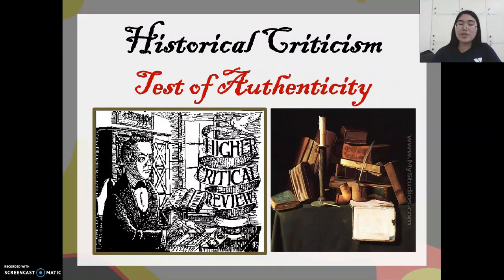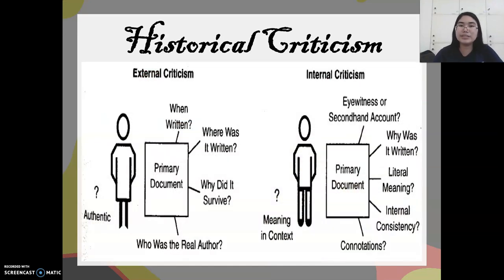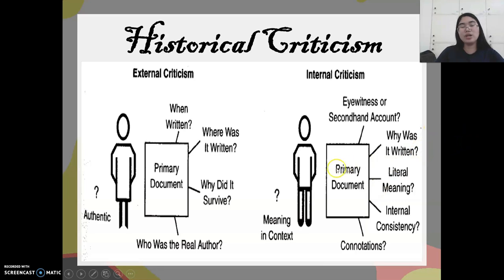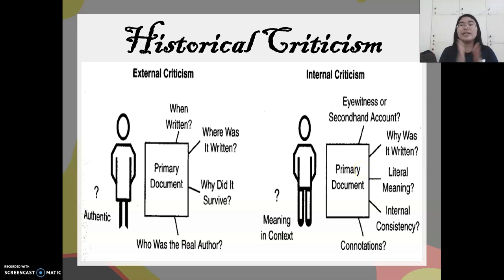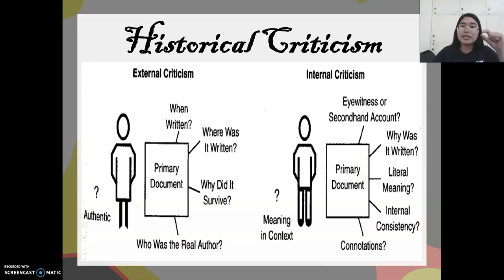When historians gather data, they need to criticize whether the historical evidence is true. Historical criticism must be done to test the authenticity, whether the material is correct, reliable, or true. External criticism and internal criticism are applied. External criticism asks: where was the document written, why did it survive, and who was the real author? For instance, the works of Dr. Rizal could be subject to external criticism. Internal criticism examines whether it is eyewitness or second-hand, and what is written and its literal meaning. For example, if a document contains the word 'globalization,' globalization did not exist during the Spanish era — so of course it would be unreliable. The structure of the book is external criticism, while the content of the book is internal criticism, as with El Filibusterismo.